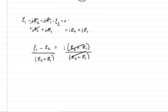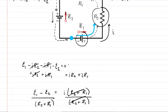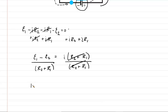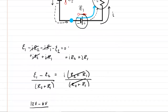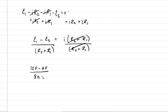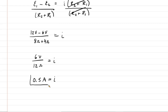Plugging in the given values: EMF1 is 12 volts and EMF2 is 6 volts, R2 is 8 ohms and R1 is 4 ohms. In the numerator we have 12 minus 6 equals 6 volts, divided by 12 ohms total resistance, giving us 0.5 amps. The correct answer to part A is that the current equals half an amp.